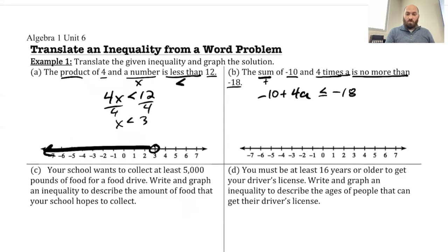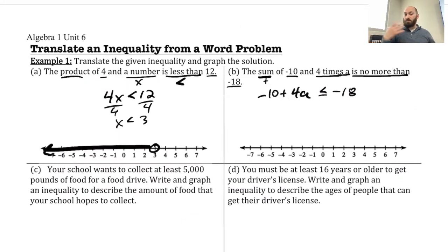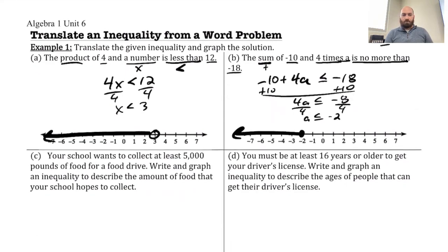So no more than, because when I say something like this, if I say 5 is no more than 5, is that true? Yes. It's not more than that, it's the same. So that still counts there. Is no more than is a less than or equal to here. And that's it. So now I got, just like before, I'm going to go ahead and solve this. So I'm going to add 10 to both sides. 4a less than or equal to negative 8. Divide by 4. A is less than or equal to negative 2. So that's going to be a closed circle on negative 2 and then off to the left.